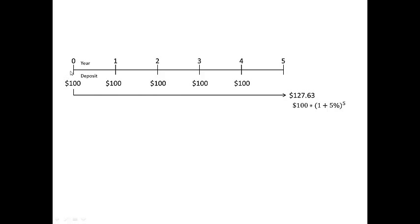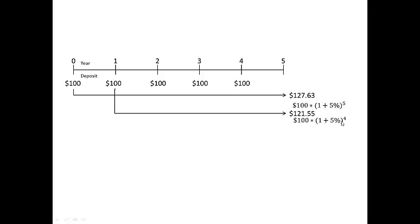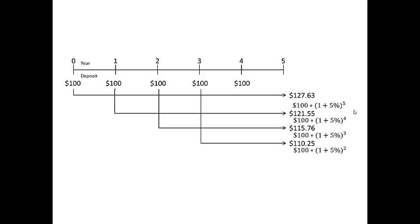Similarly, the amount paid four years ago, or at the end of the first year, will be $121.55, because it's a hundred dollars compounded over four years at a 5% interest rate. The same logic applies to amounts received at the end of the second year, third year, and fourth year.